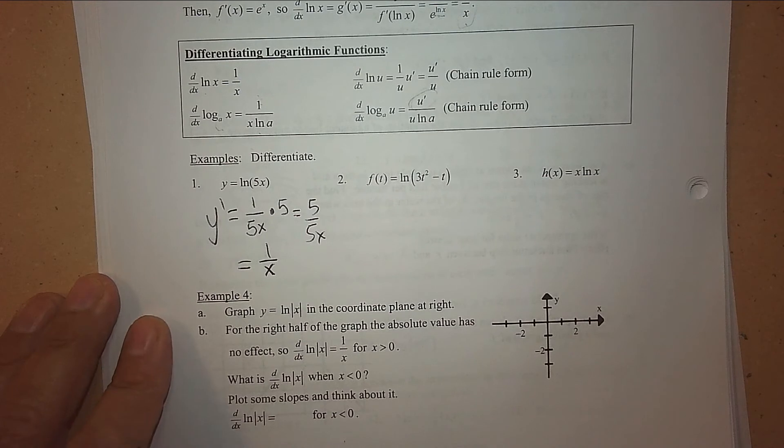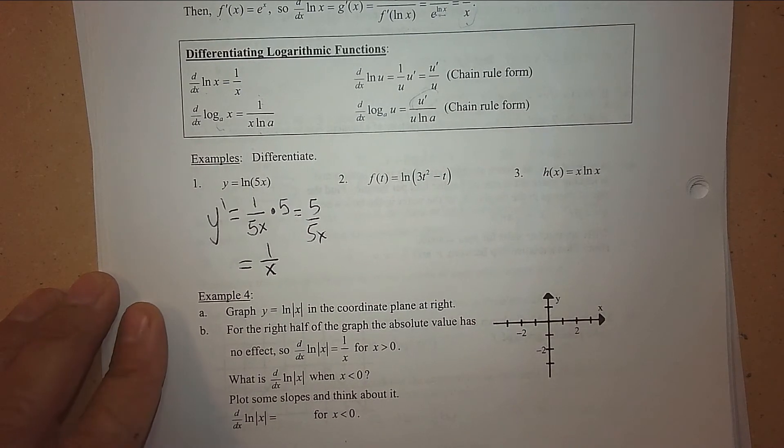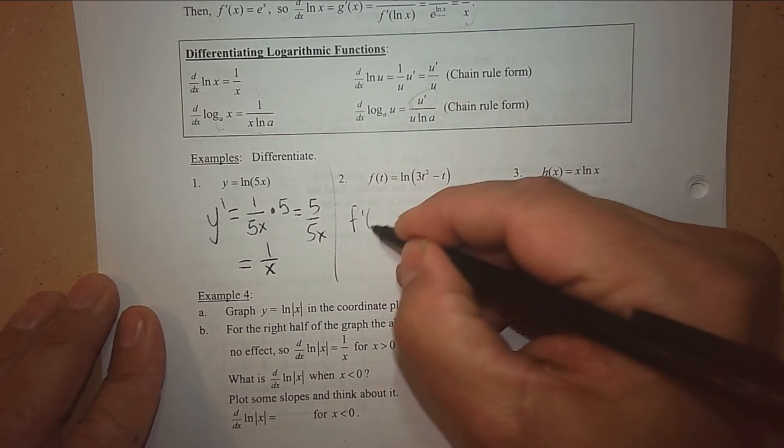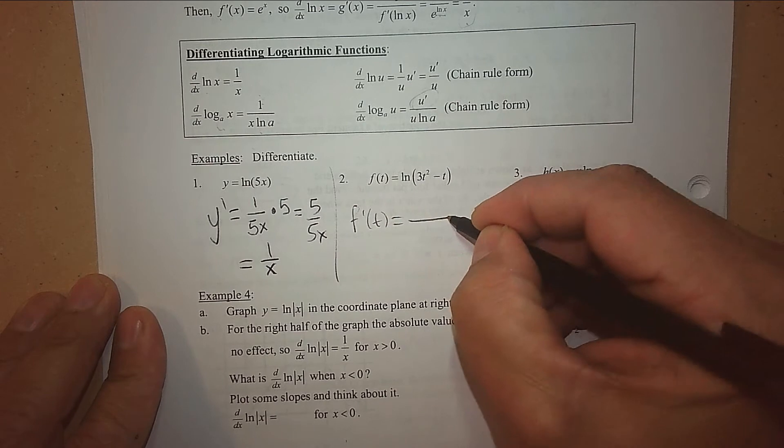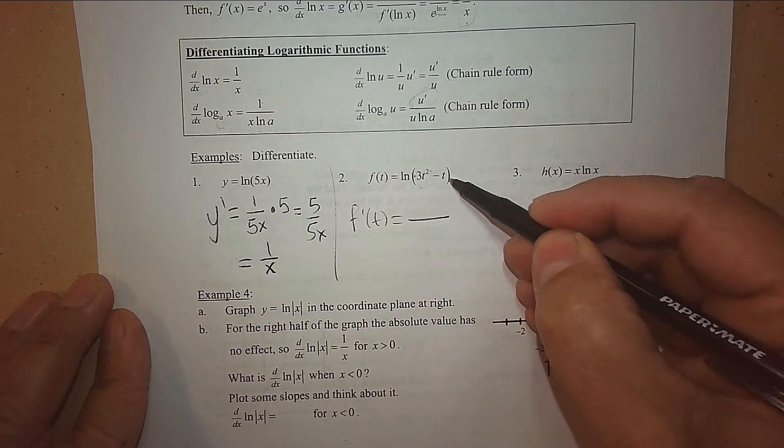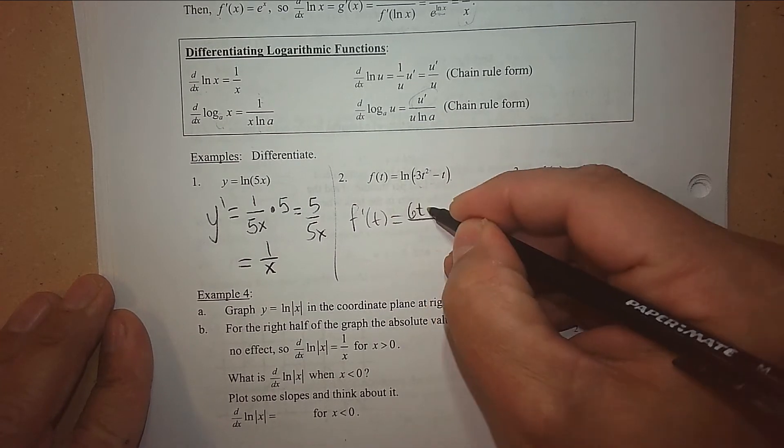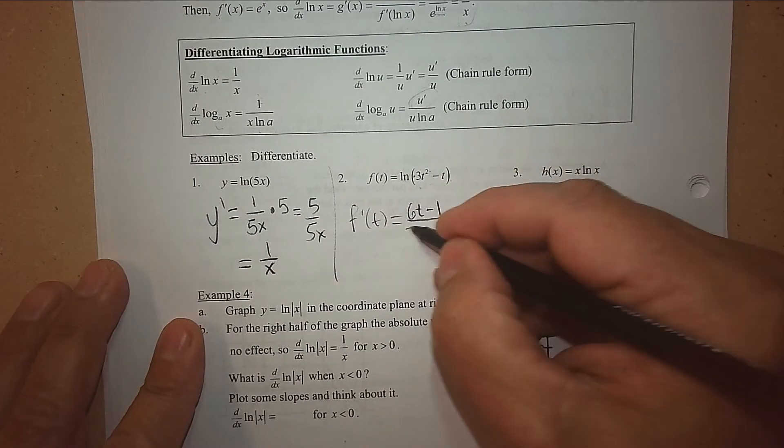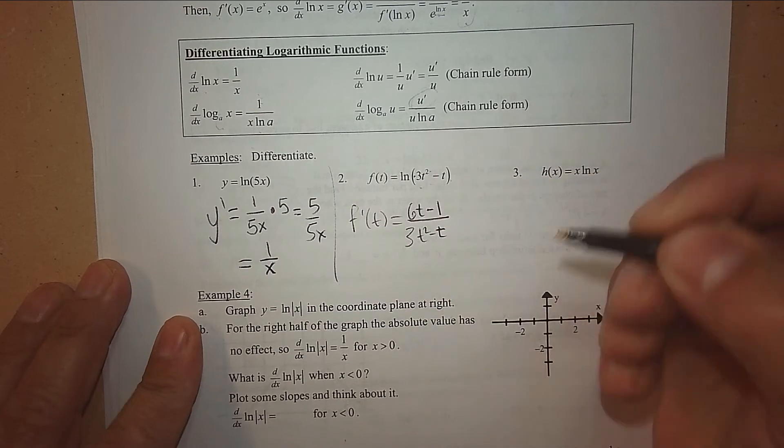Where does the hook go? In the numerator. Let's do this now. It's going to be the hook, which is 6t minus 1, in the numerator. And the denominator is 3t² - t. Done.